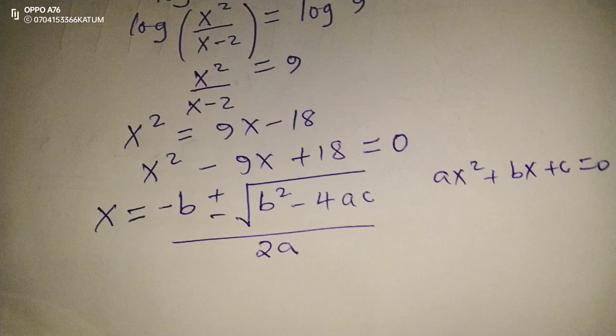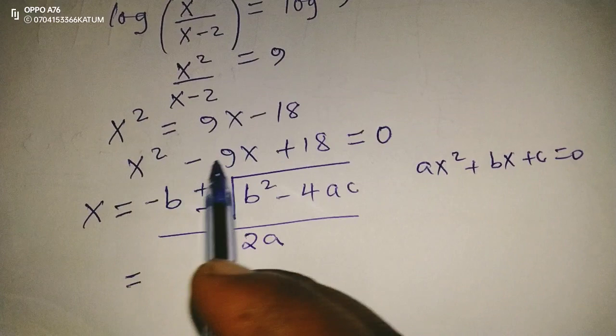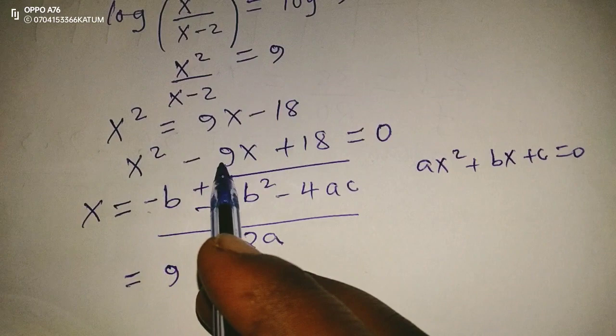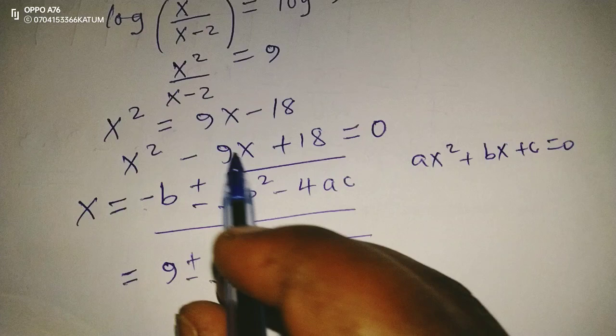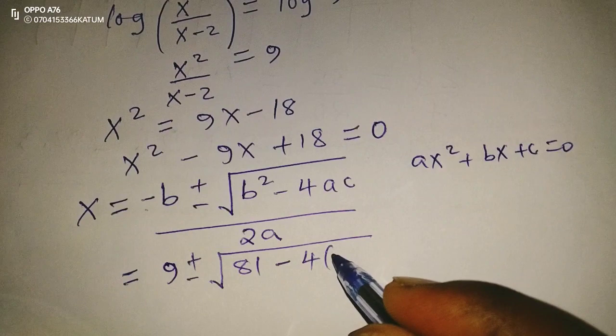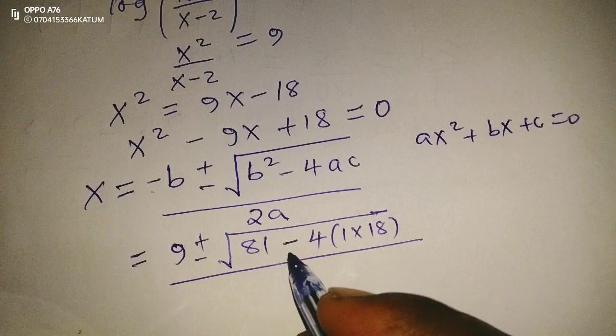The value of b is negative 9. Therefore, negative b becomes positive 9, because of the negative negative 9. Then plus or minus the square root of negative 9 squared gives us 81, then minus 4 into a, which is 1, times c, which is 18.